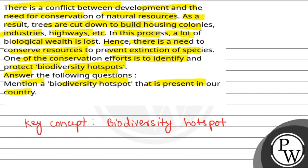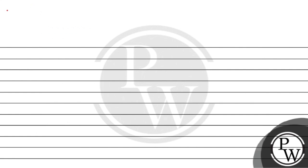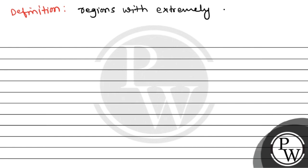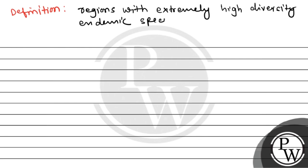We will first talk about biodiversity hotspots by definition. A biodiversity hotspot is a region with extremely high species diversity. These regions also have a high number of endemic species — species that are found only in that local region — and face significant threat from human activities.